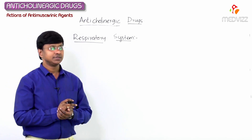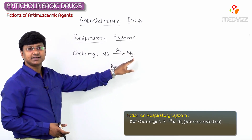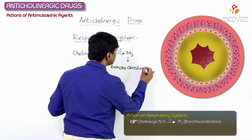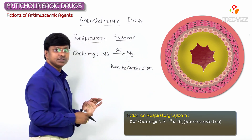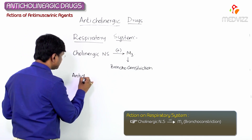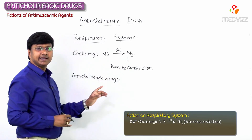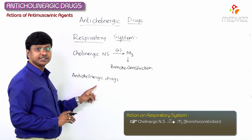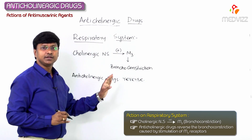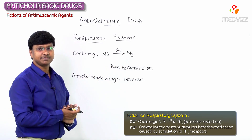The cholinergic nervous system stimulates the M3 receptors and causes bronchoconstriction. When you give anticholinergic drugs, what these drugs will do is reverse the bronchoconstrictor action which is caused by stimulation of the M3 receptors.